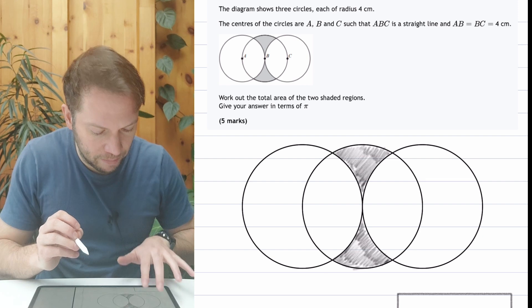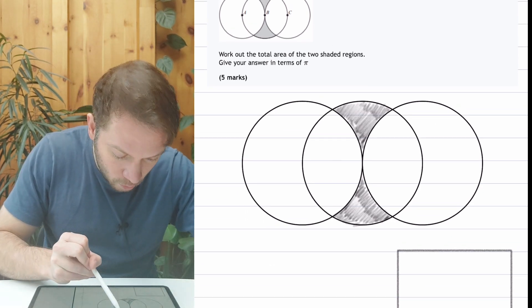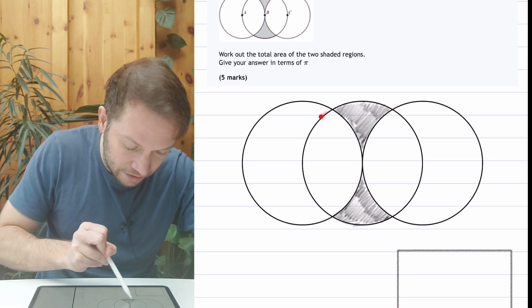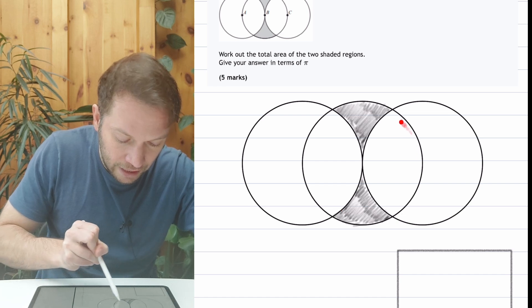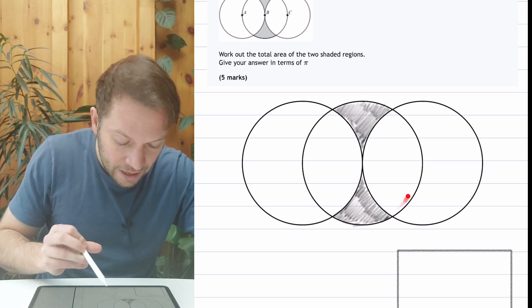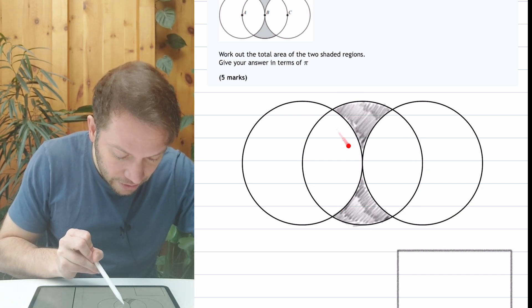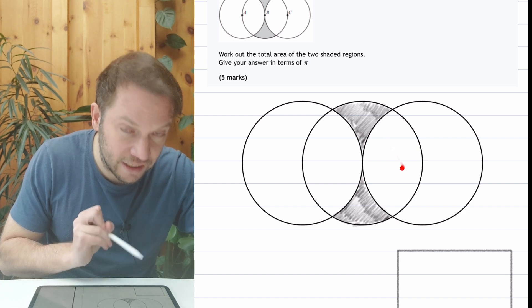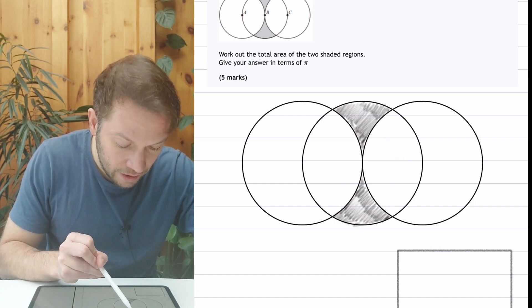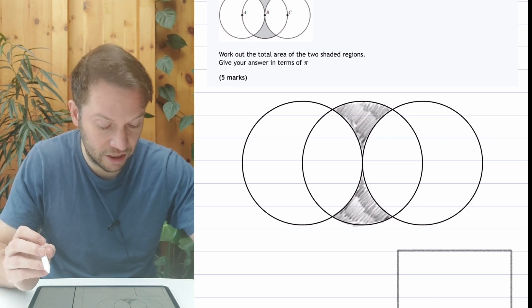This looks more like a cutty-out problem because if we start with this circle in the middle and find its area—and we know how to find the area of a circle, it's just π r²—then we can subtract this region on the left and this region on the right, and that will leave this region at the top and the bottom. So that's what we're going to do.